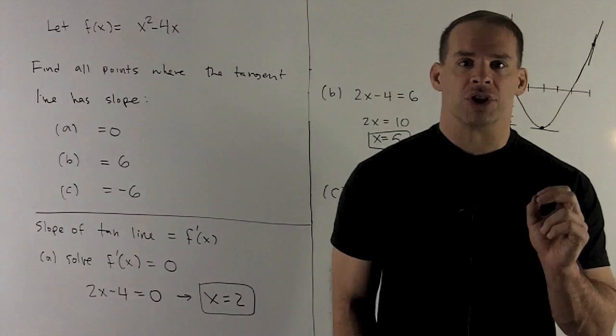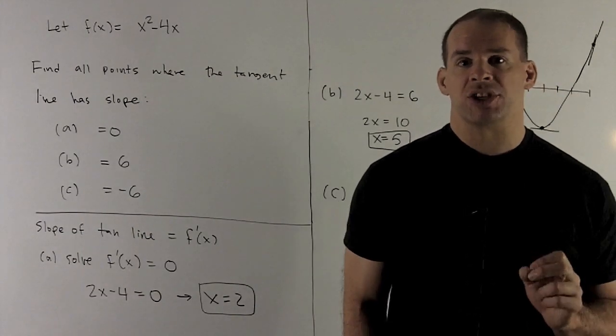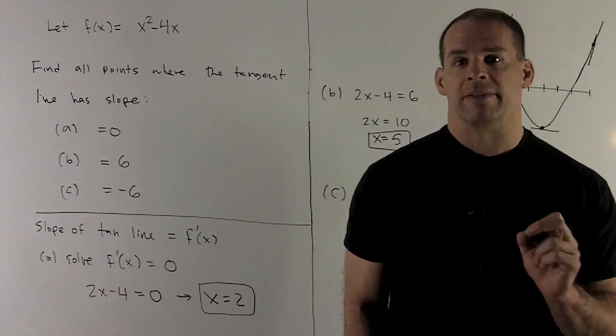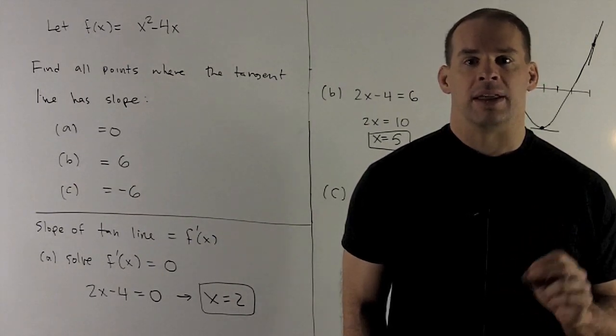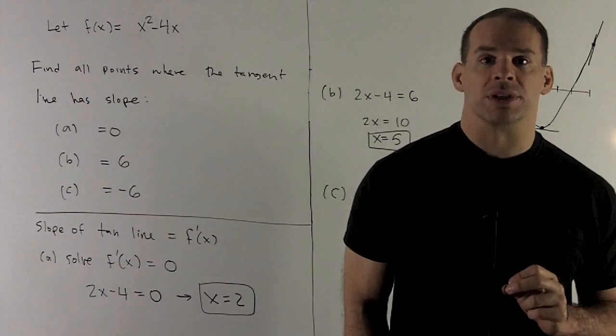To solve our problem, we first need to note the slope of the tangent line is equal to the derivative of our function evaluated at our point of interest. In this case, we're trying to find the points of interest.